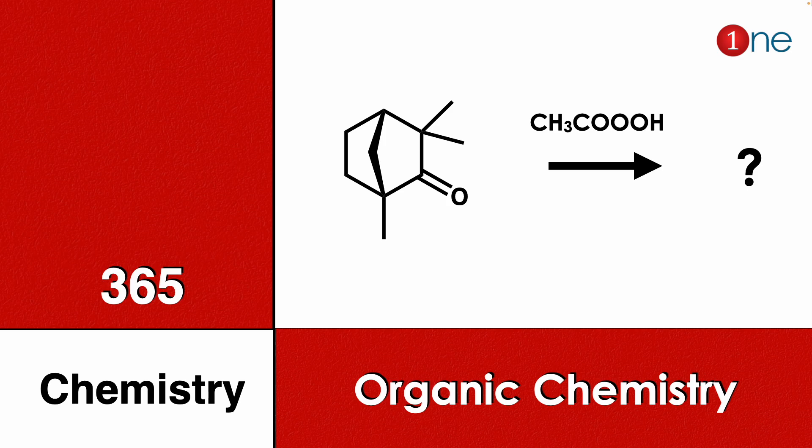Welcome to One Chemistry, this is the 365 Chemistry Series — organic chemistry questions for you. Here you have a normal ketone system with one rigid carbon, three methyl groups, and you are using the peracid. You should find what the final product will be.